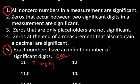The 11.0, the zero is at the end of the measurement. So that is significant because there's a decimal and it's at the end. So in this case, we would count all three to have three sig figs.